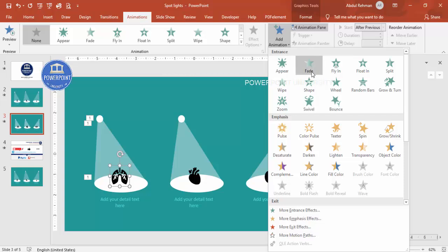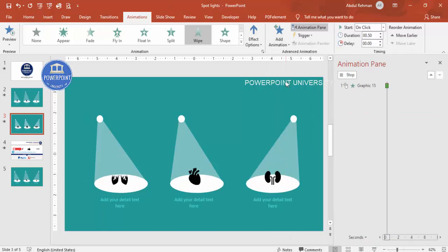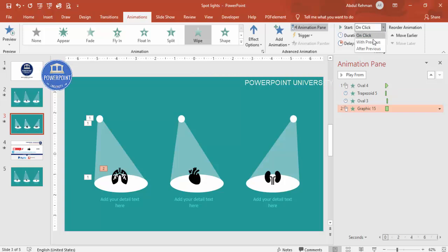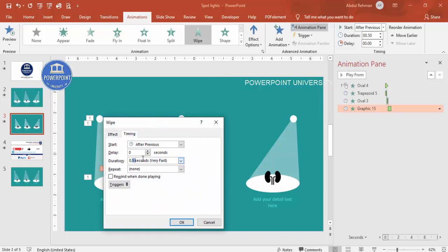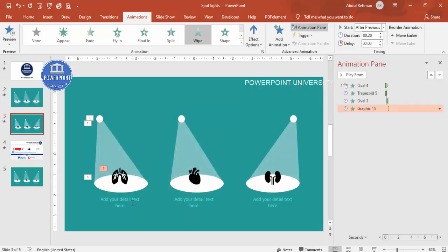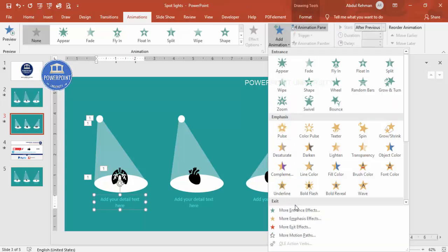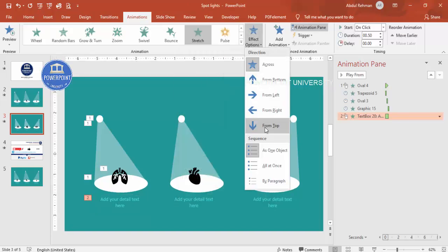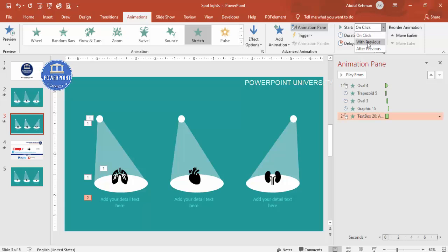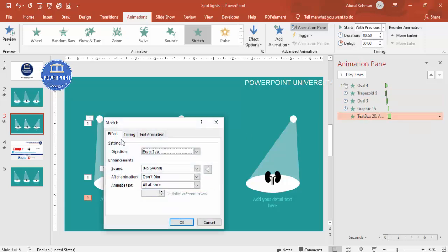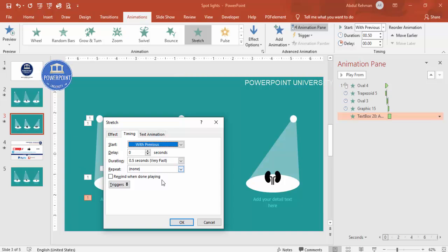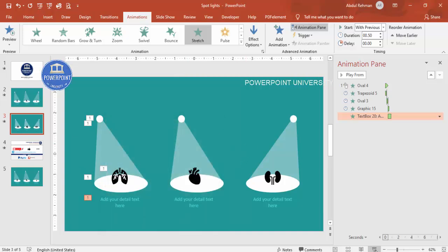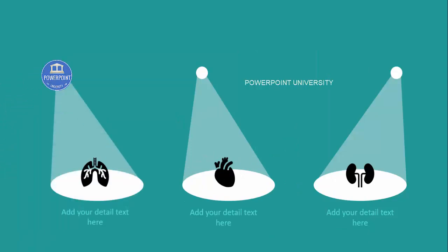For the icon, add a Wipe animation, also After Previous, duration 0.2 seconds. For the text, go to More Entrance Effects and choose Stretch — set it to come from the top, with previous or after previous. Now let me show you how it works — when I click you can see it plays something like this.